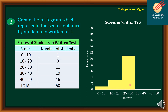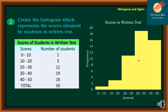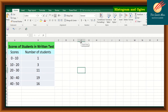Moving on, from 30 to 40 I have 19, and finally I have 16 for the range 40 to 50. Clearly, the range 30 to 40 has the highest frequency of 19, while the lowest frequency is on the range 0 to 10.